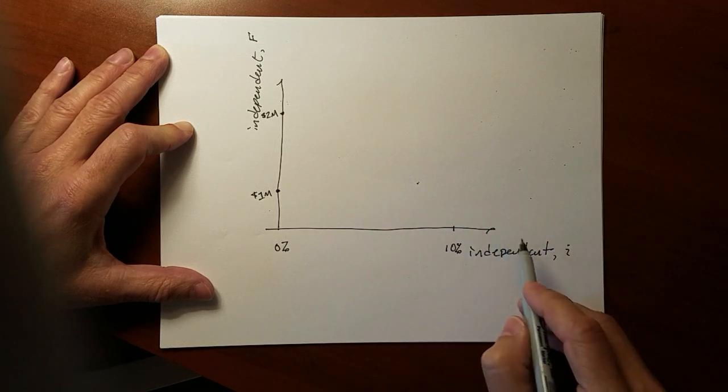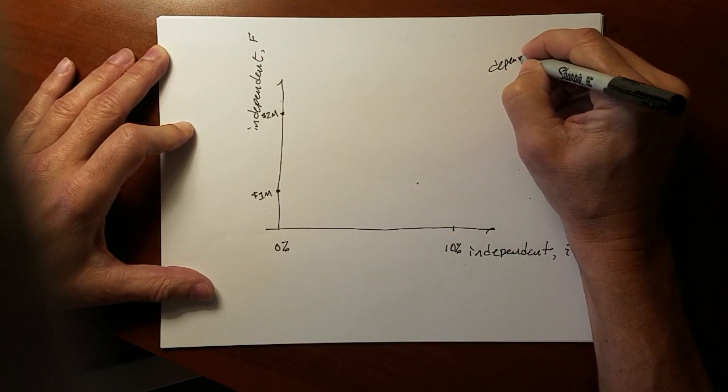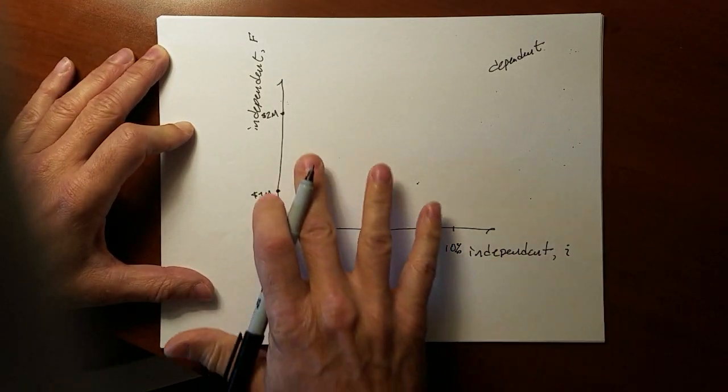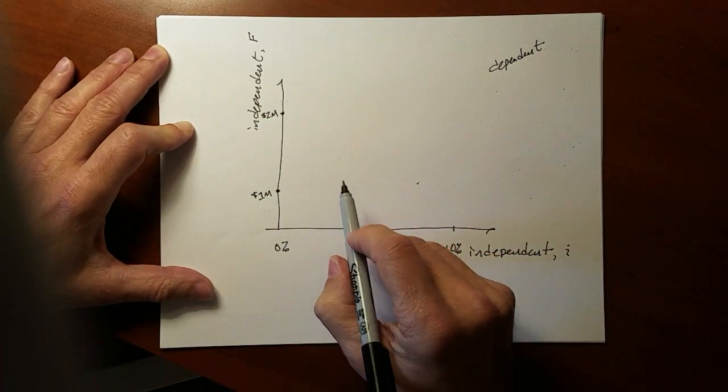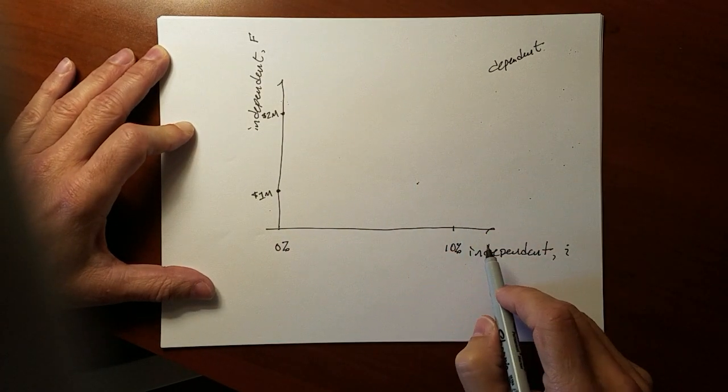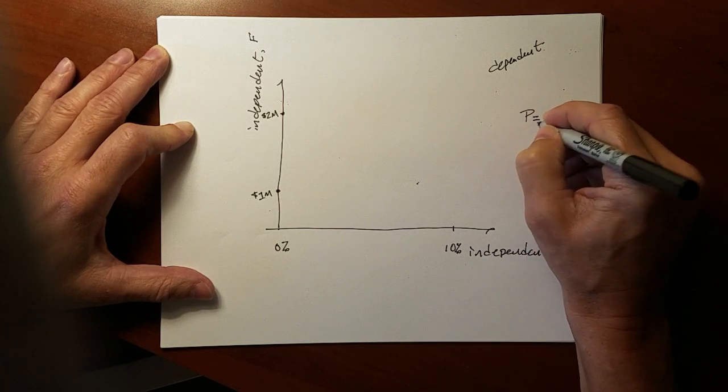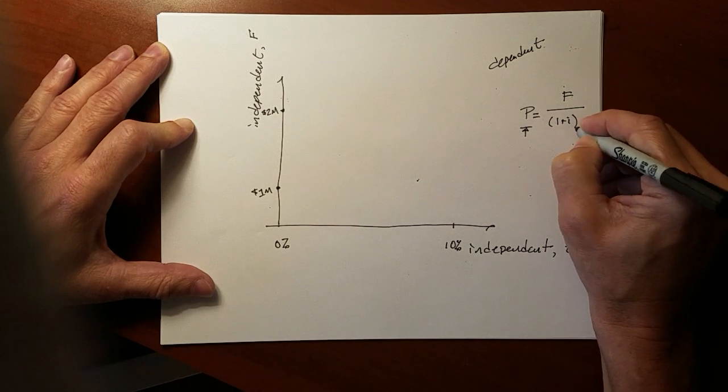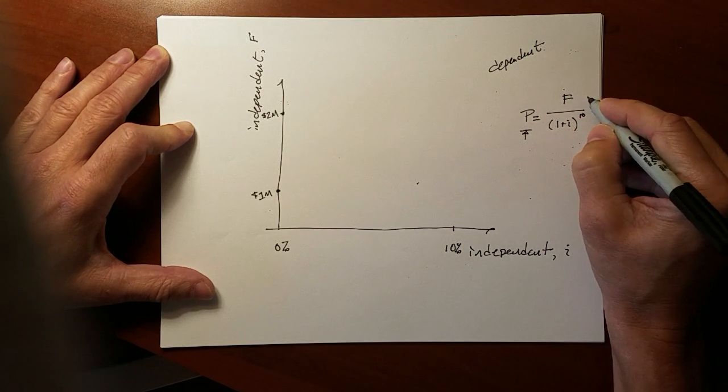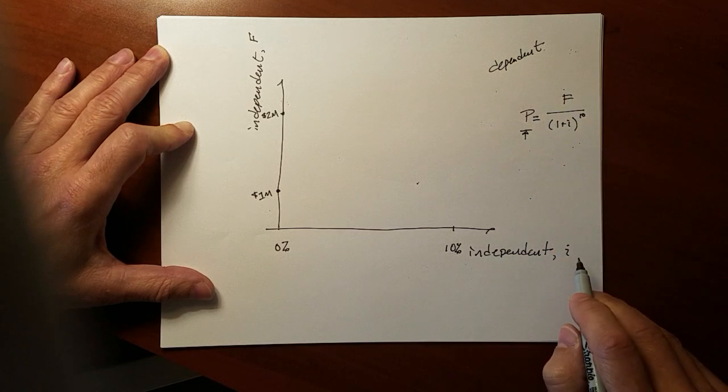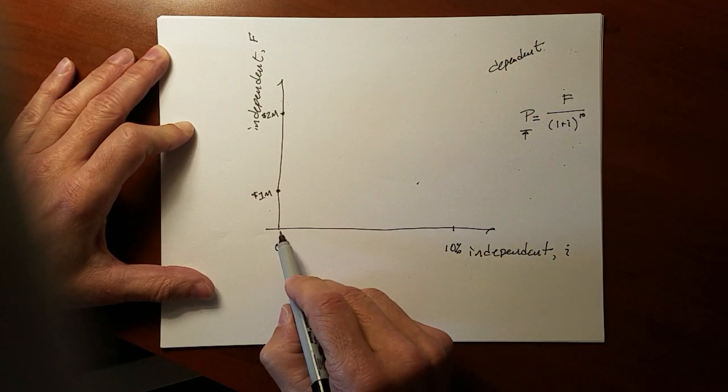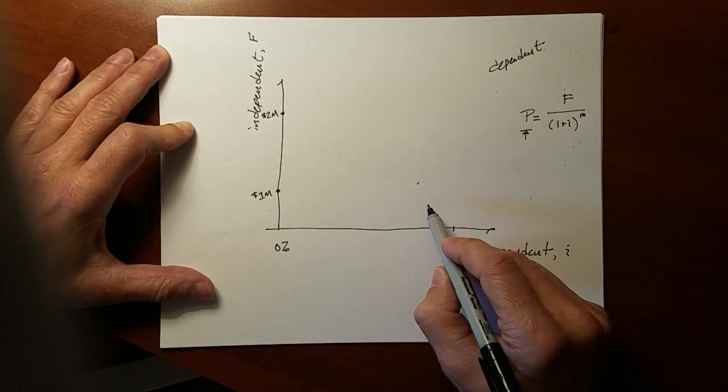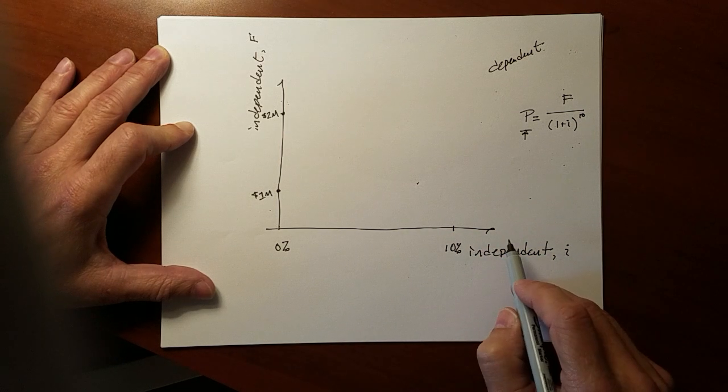To explore the dependent variable, we have to establish what in topography are called contour lines. These are going to be lines in the middle that represent constant present value. Remember, P is still the dependent variable. F remains a variable. 1 plus I to the 10. So we're exploring the relationship between P, F, and I. We would select F and I such that all of the answers along a single contour line remain the same.